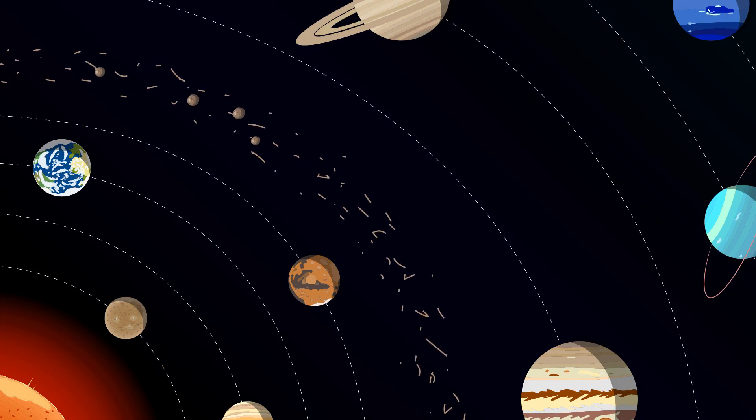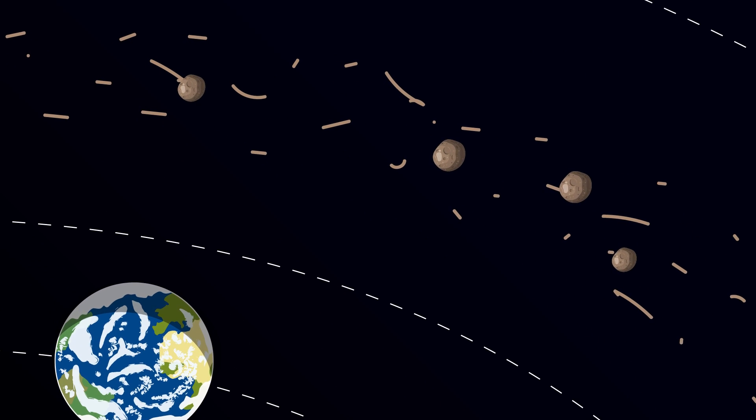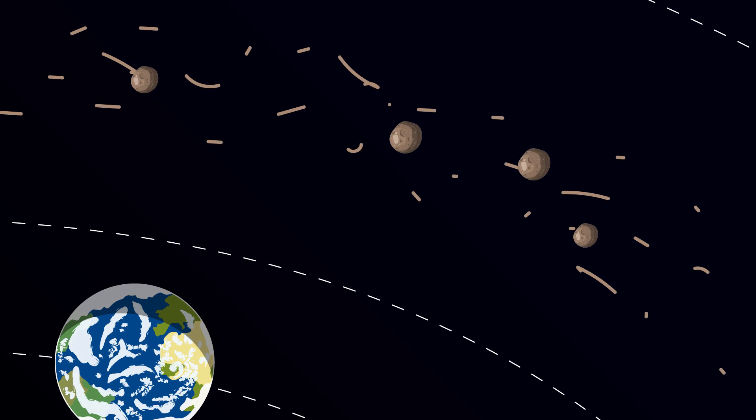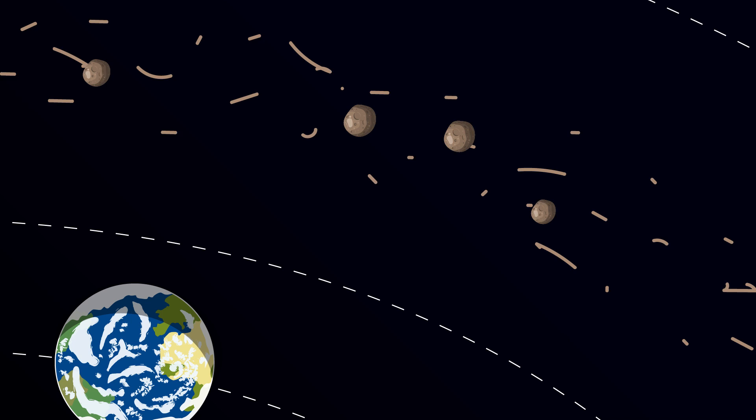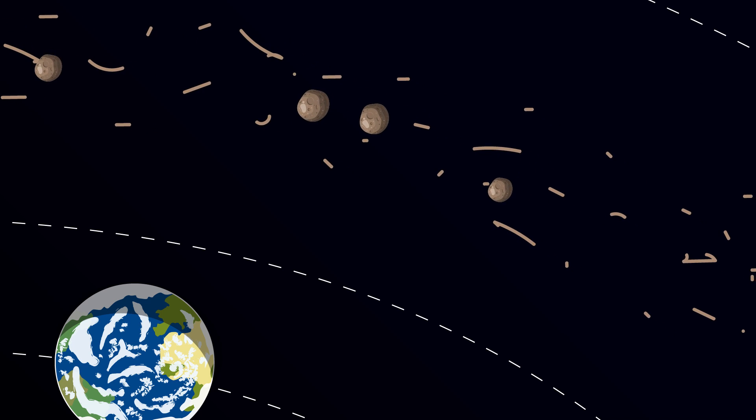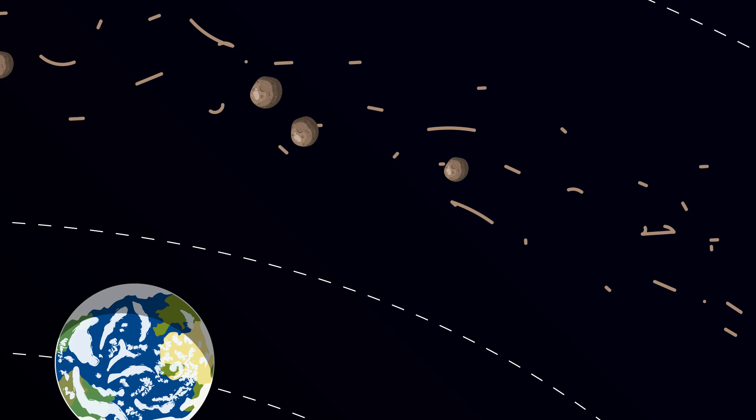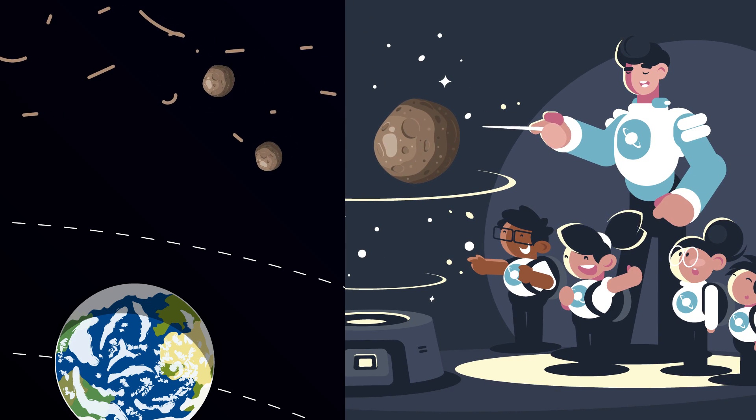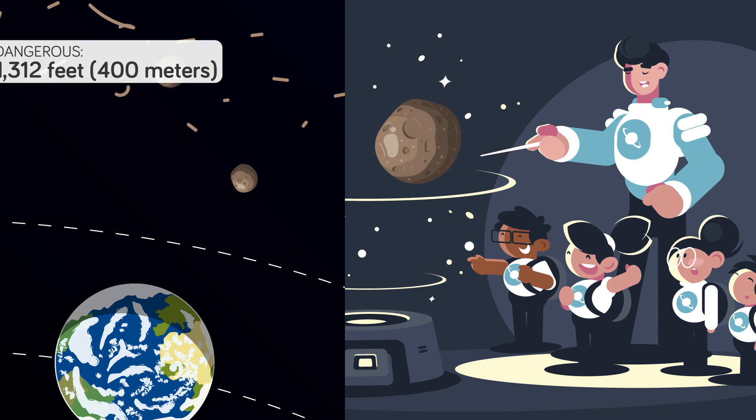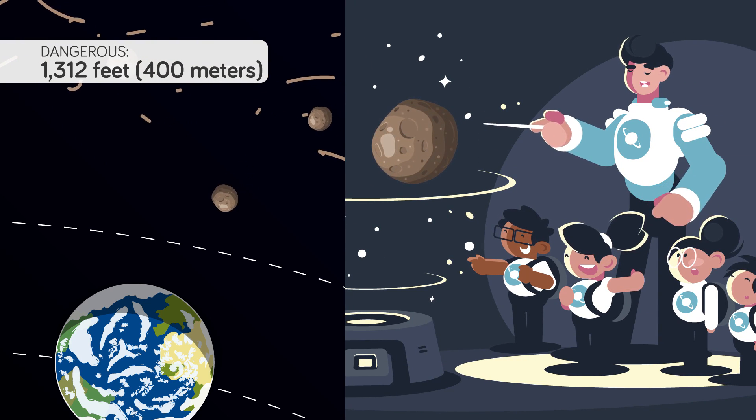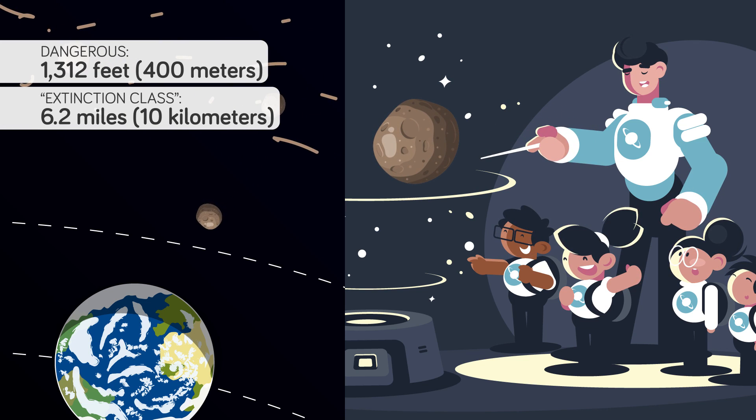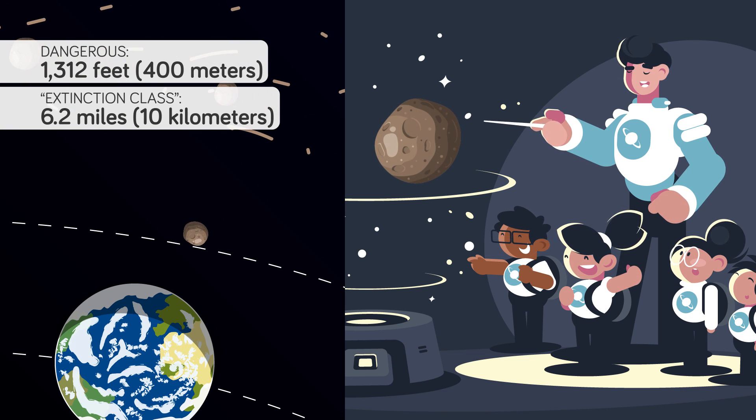While many asteroids mind their own business orbiting within the asteroid belt, some are affected by outside gravitational poles and flung out, setting into different orbits around the solar system. If an asteroid is big enough to pose a threat to at least part of humanity, then it must be at least 1,312 feet in diameter. 6.2 miles in diameter is the threshold for extinction-class asteroids, which pose a much larger existential threat.